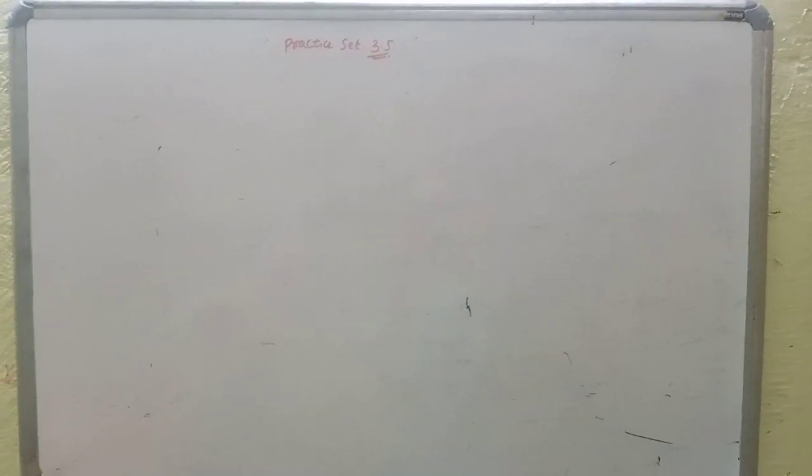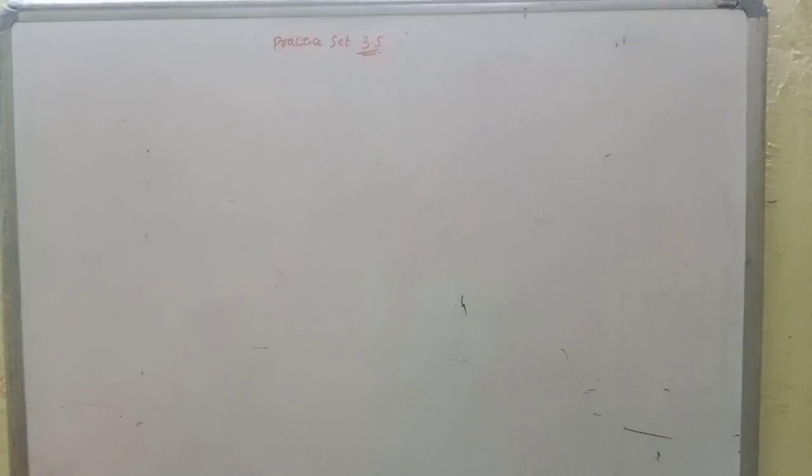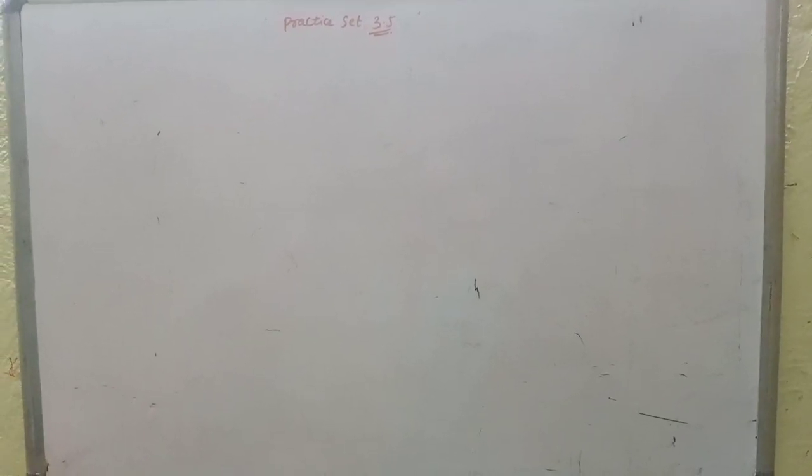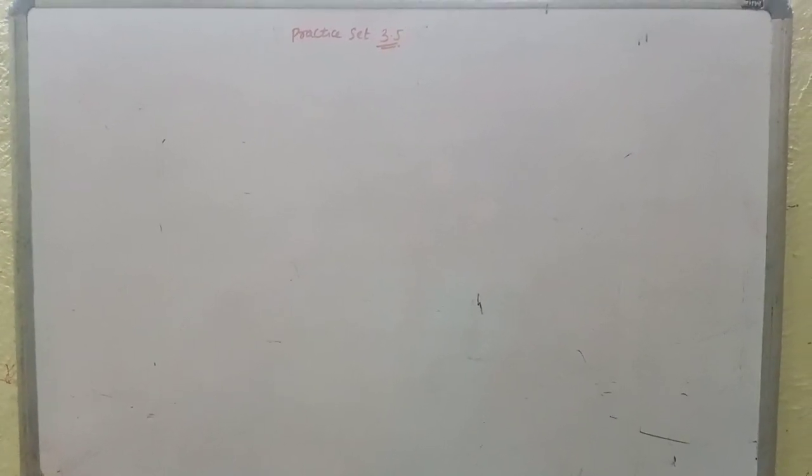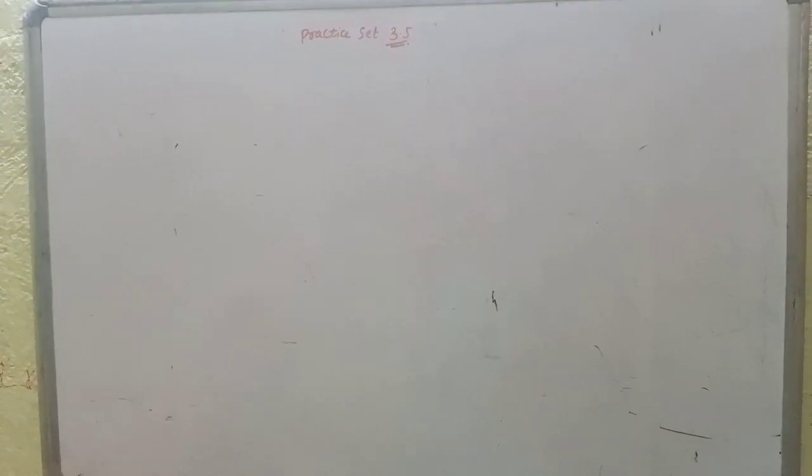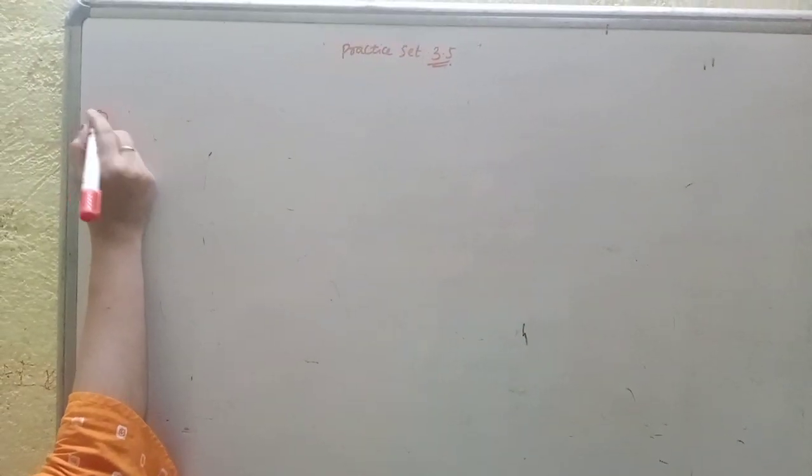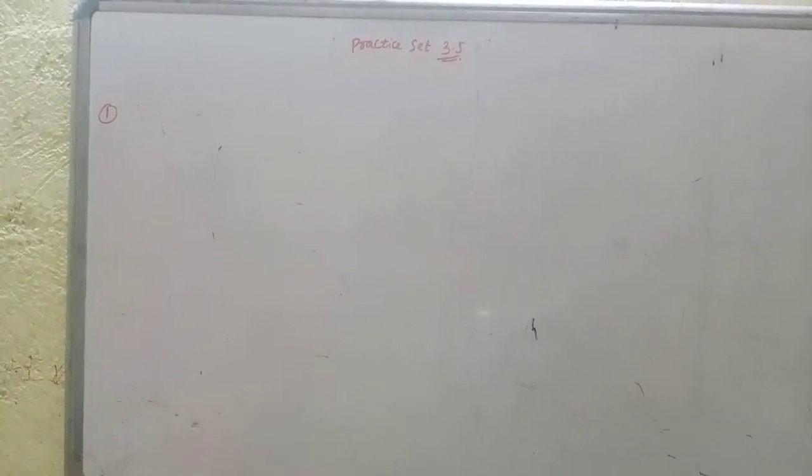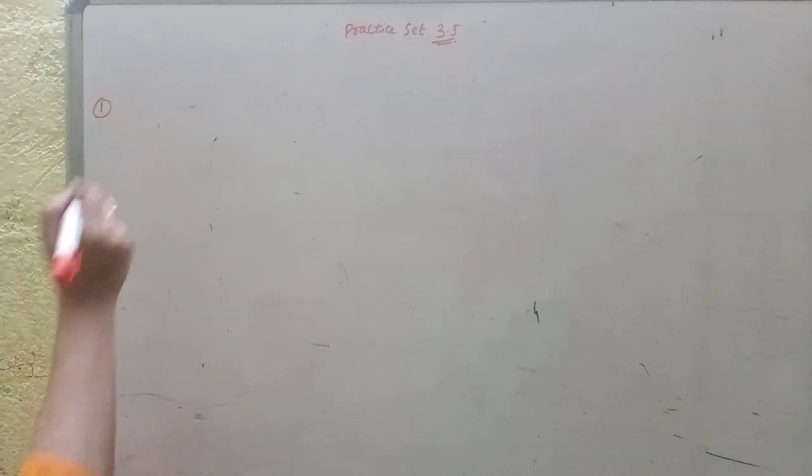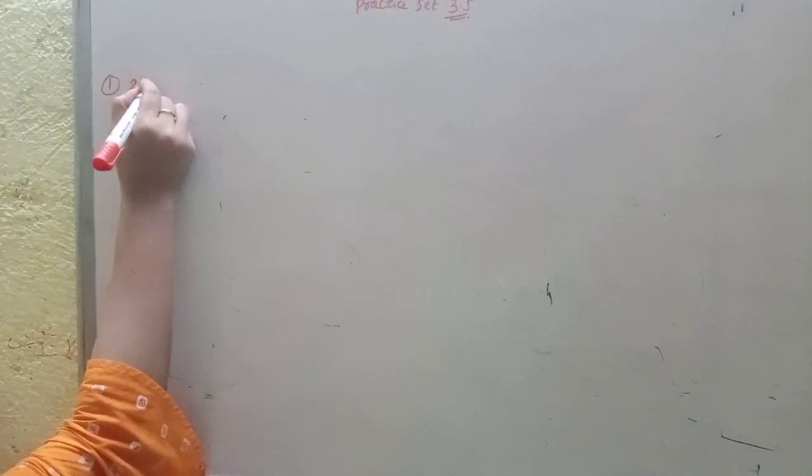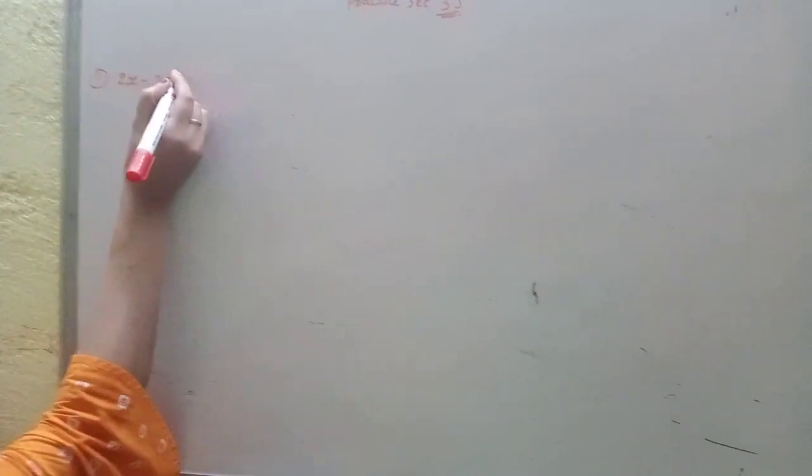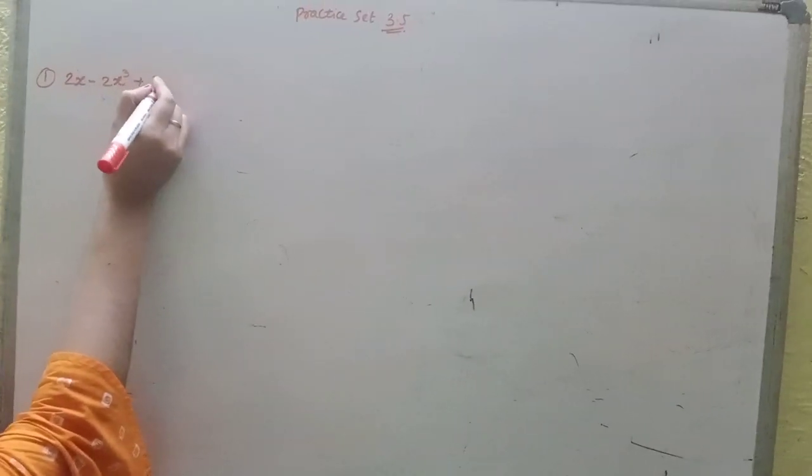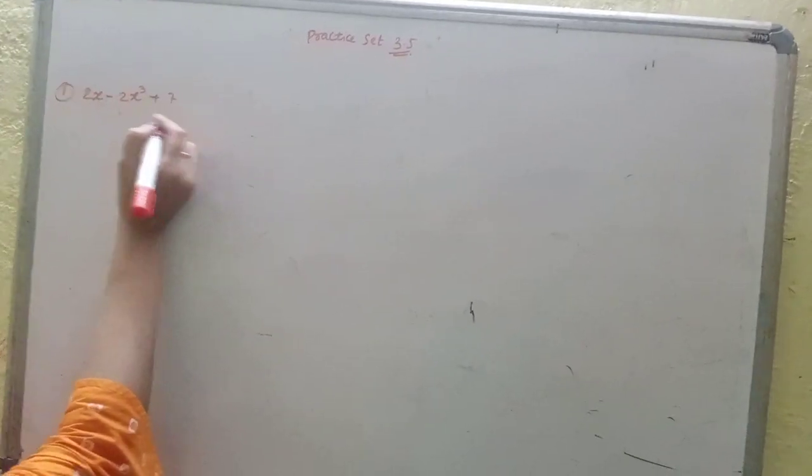Good morning dear students, let's start with the next exercise, practice set 3.5. It's a very easy exercise, I'll explain and you will do on your own. First question: find the value of polynomial 2x - 2x³ + 7 using the given values for x.